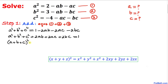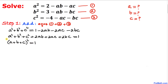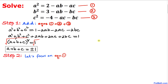So the left hand side can be written as (a + b + c)² = 1. Taking the square root on both sides to undo the square, we end up with a + b + c = ±1.